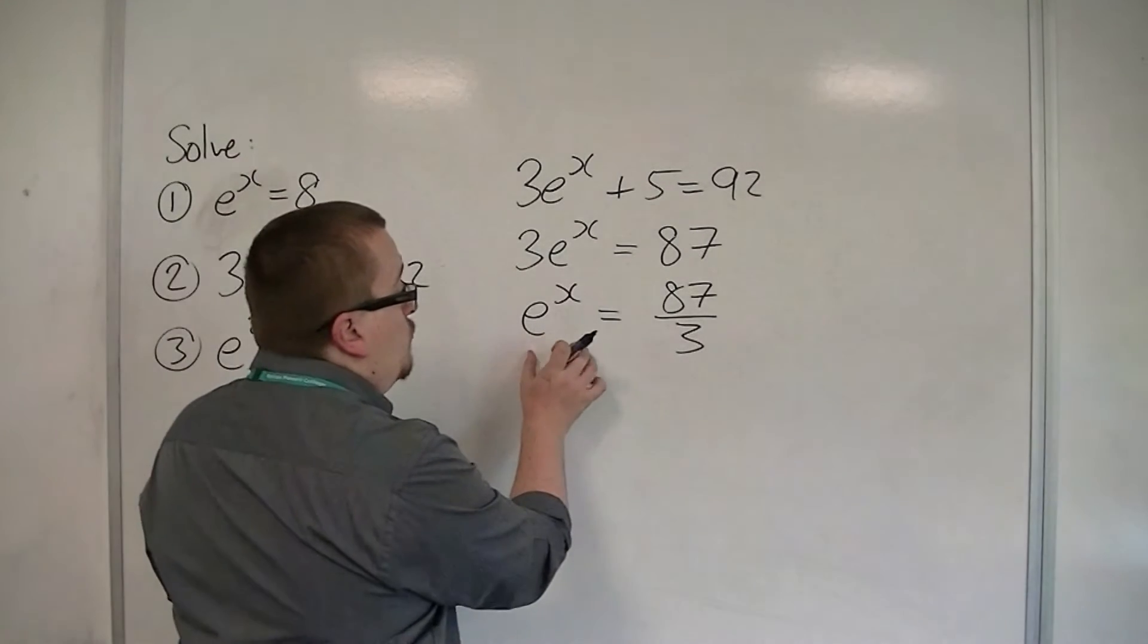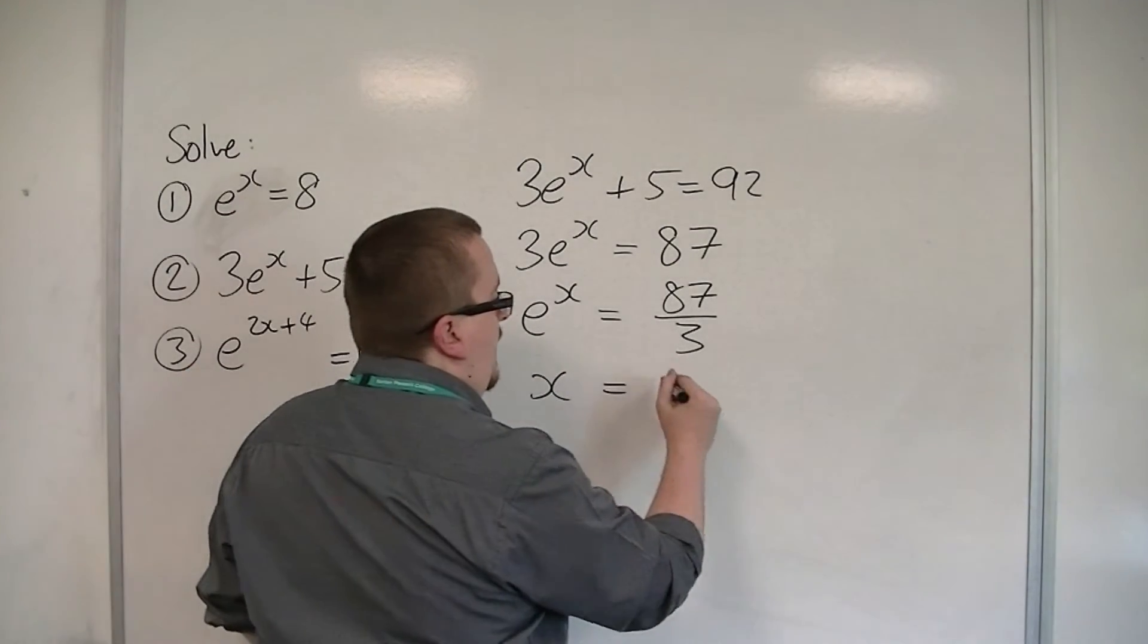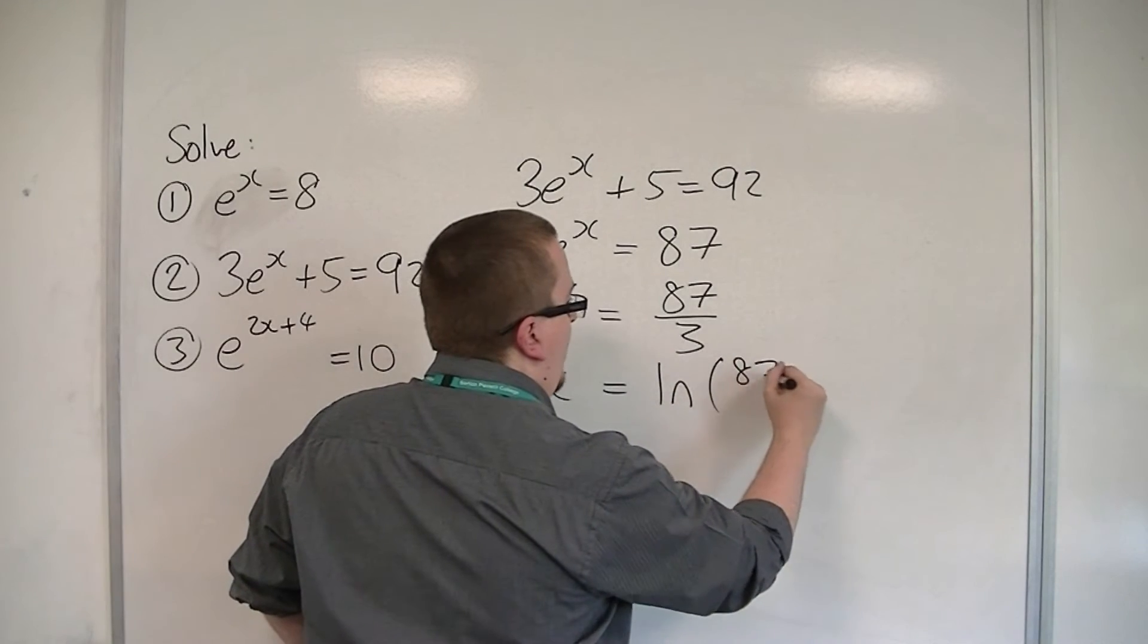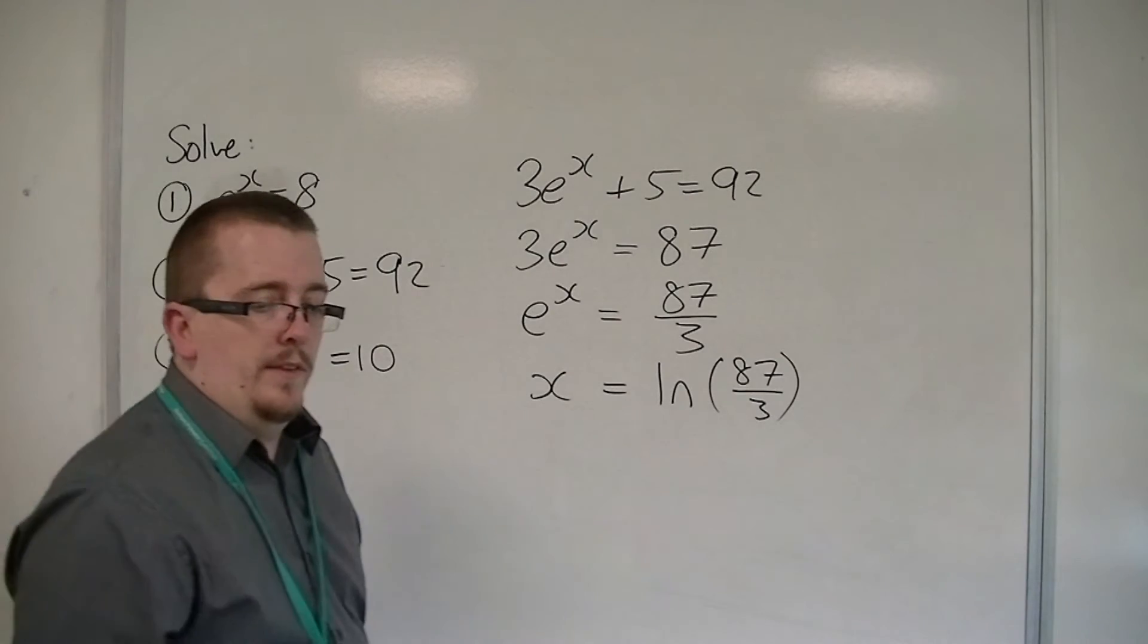And now I'm not going to bother writing log of e to the x, because I know that log of e to the x is just x. So x is just log of 87 over 3. And that's how I would leave my answer.